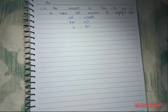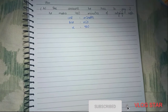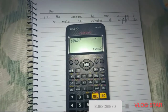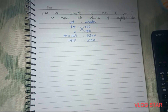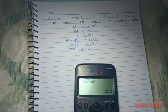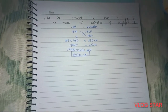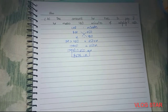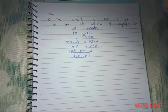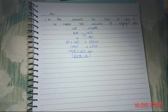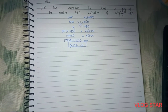We set up the ratio and cross multiply. This means Mikhail has to pay 27.6 dollars if he makes 460 minutes of outgoing calls.